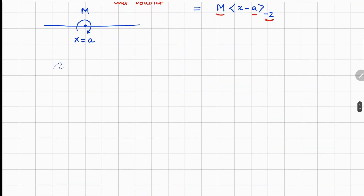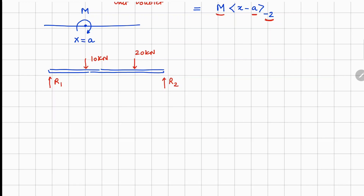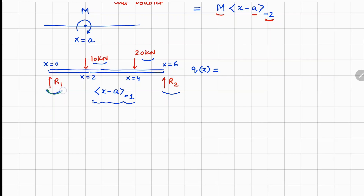Now let's implement this for a simple beam. Say we have a beam with reaction R1 at the left end, a 10 kN downward force, a 20 kN downward force, and reaction R2 at the right end. All are point loads, so we expect four entries in the q function. The positions are x equals 0, x equals 2, x equals 4, and x equals 6. For the first function: R1 times (x minus 0)^(-1), since R1 is upward (positive).